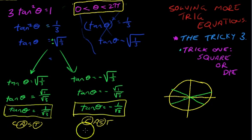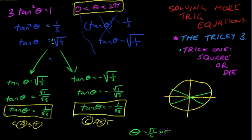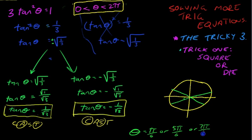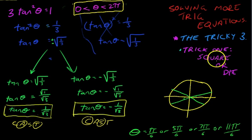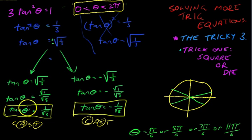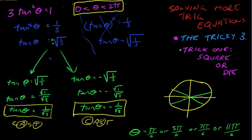That means I've got four answers. Theta equals pi on six, or five pi on six, or seven pi on six, or eleven pi on six. So this is the first in our trilogy of tricky questions. There's a squared here — you've got to square root, and don't forget the plus or minus. That splits it into two, and then once you've got these, you can just answer it as normal. There are a few of these for you to practice, and in the next video we'll look at trick number two.